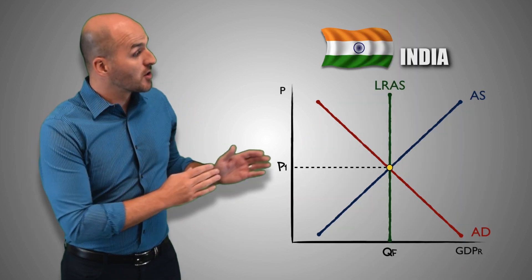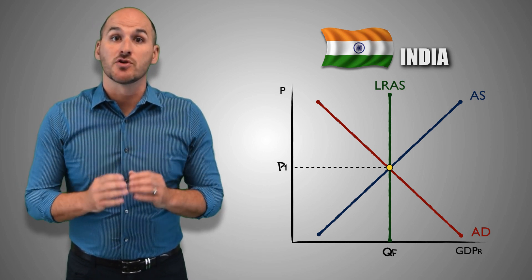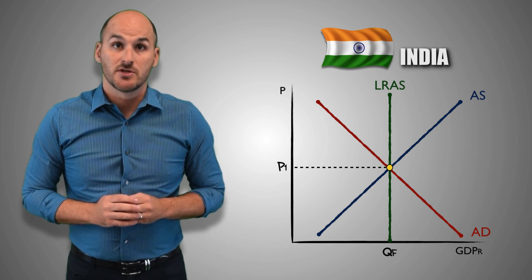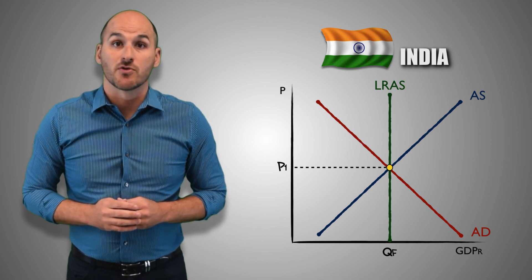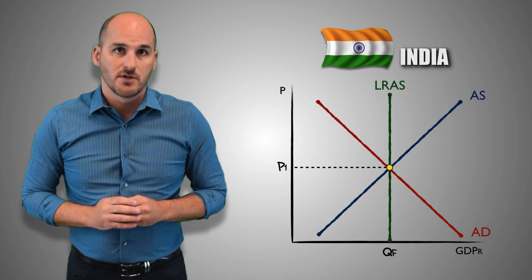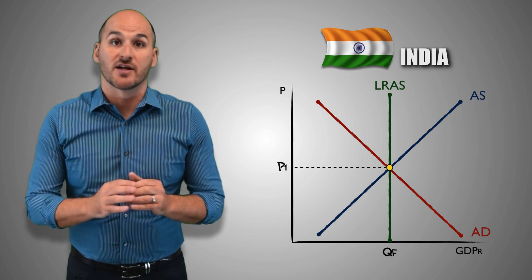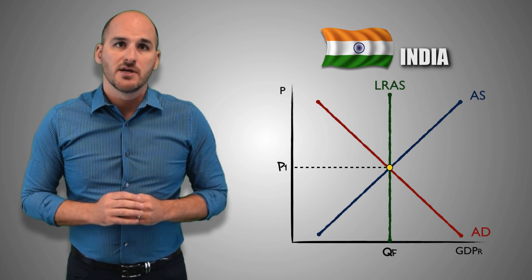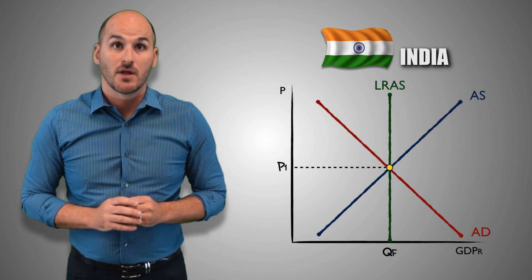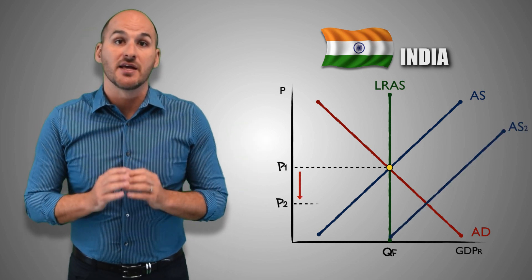Suppose the Indian economy is at long-run equilibrium, and the Indian government announces new measures to reduce tuition at colleges and universities. Higher education in India will become more accessible. Students and other potential members of the workforce will seize the opportunity to learn new skills and acquire human capital. These skills will be used during the production process and make the Indian workforce more productive, so domestic firms will produce greater quantities of real GDP output at every price level, leading to an increase in short-run aggregate supply.